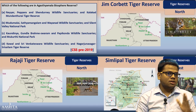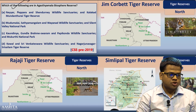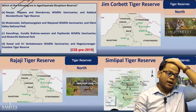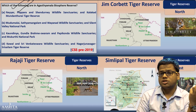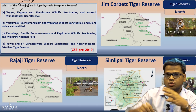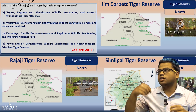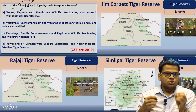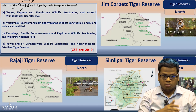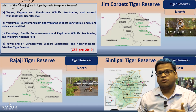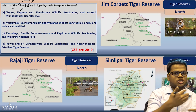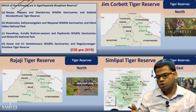Let us start with what we discussed in the last session. We discussed how questions are coming and how this Impetus series can help in cracking them. We divided India into sections — North, Central India, Northeast India, and South India — for our convenience. This will also help us when we read tiger corridors. In November 2019, the government came up with the idea of tiger corridors, and our geographical understanding will help us understand those corridors.